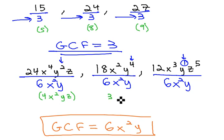18 over 6 is 3. The x squareds would divide out, and then we'd have y cubed after subtracting the exponents.